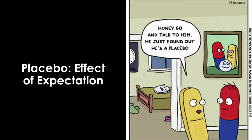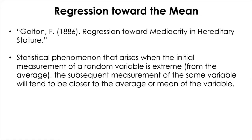The only way you can show this is to employ a placebo-controlled group against your experimental group. Another phenomenon closely related to the placebo effect is called regression toward the mean — a statistical phenomenon that arises when the initial measurement of a random variable is extreme from the average, and the subsequent measurement of the same variable will tend to be closer to the average or mean.